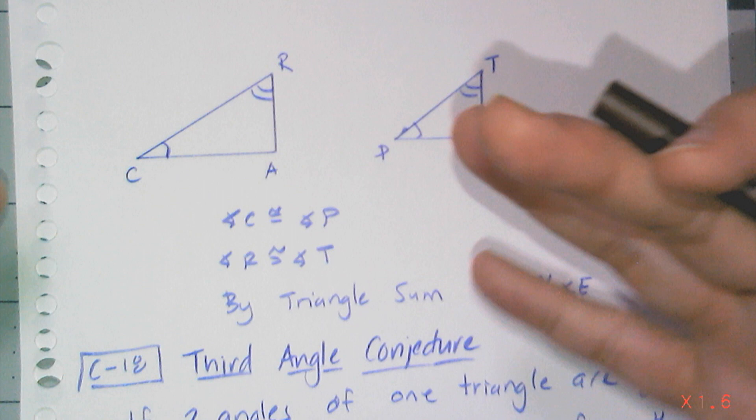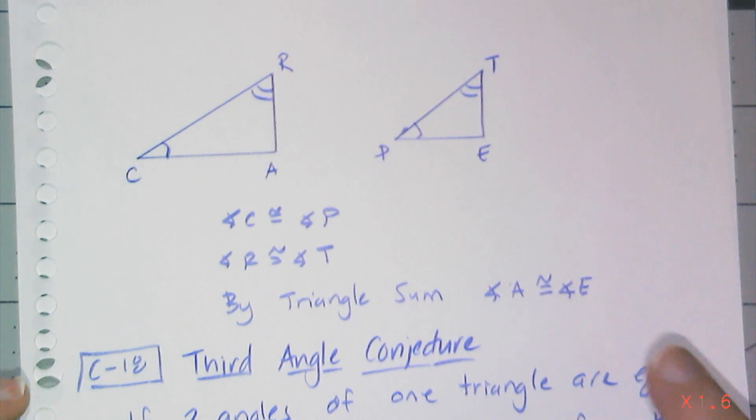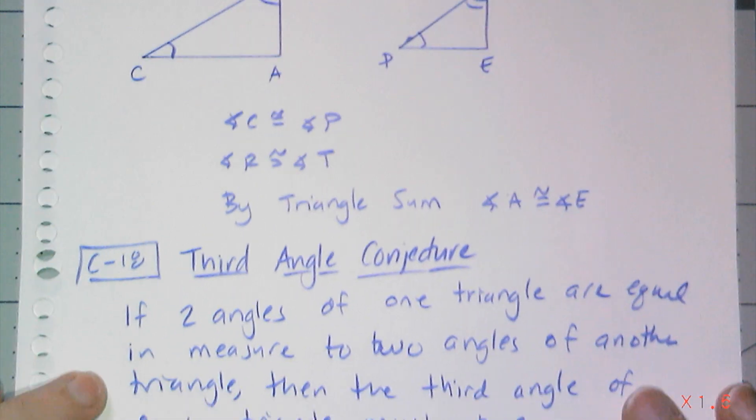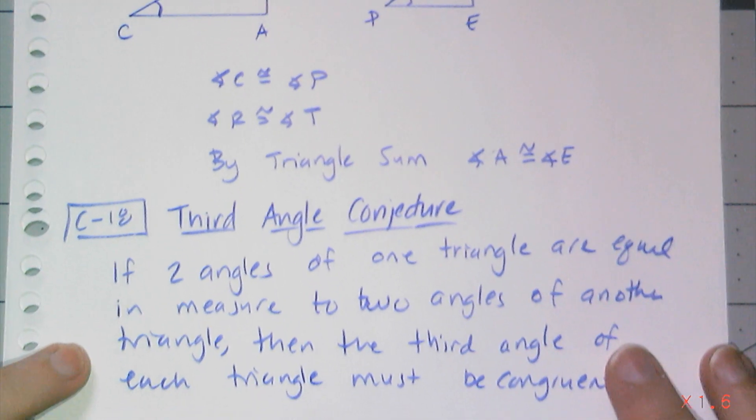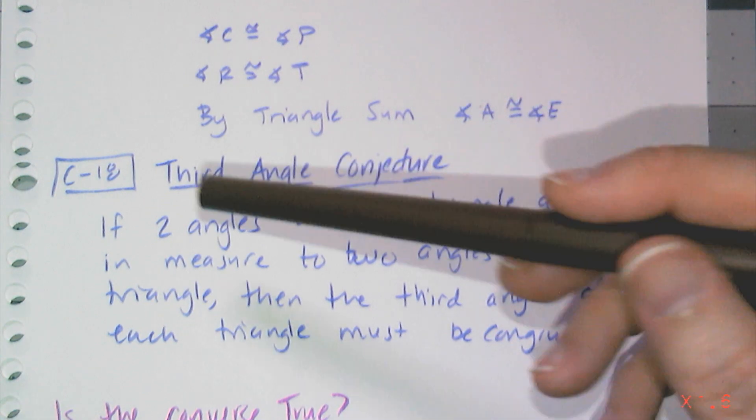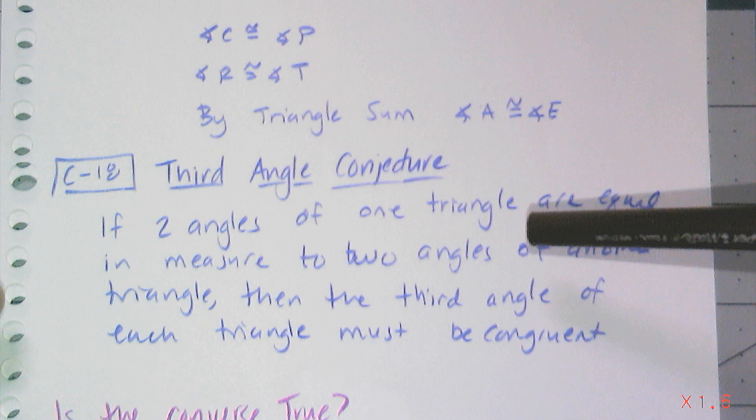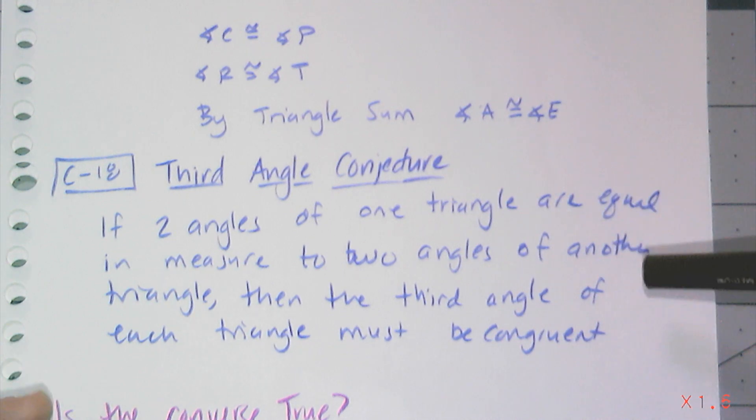I have three angles in there. Two of them are congruent. That means the third one has to be congruent. It's one of the easier conjectures to kind of wrap your head around. And it's called the third angle conjecture. It's C-18. It says if two angles of one triangle are equal in measure to two angles of another triangle, then the third angle of each triangle must be congruent.